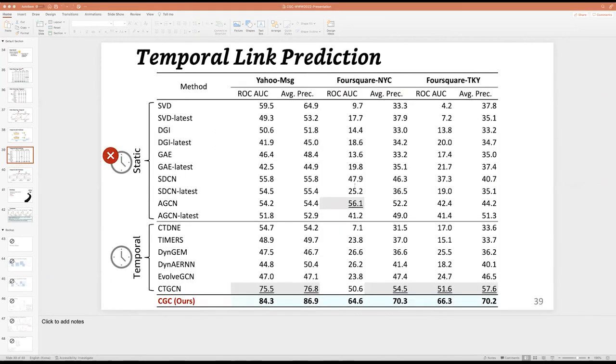Yeah, that actually depends on the dataset. So the snapshot interval for one of the datasets was 12 hours, and the longest was one year for DBLP. And for other two datasets, temporal datasets, like Foursquare datasets, the snapshot interval was 30 days. So yeah, it ranged.